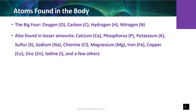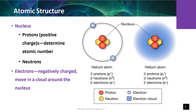Each macromolecule is characterized by unique physical, chemical, and biologic properties that depend on the structure of their atoms. Atoms are divided into a nucleus, neutrons, and electrons that orbit the nucleus.